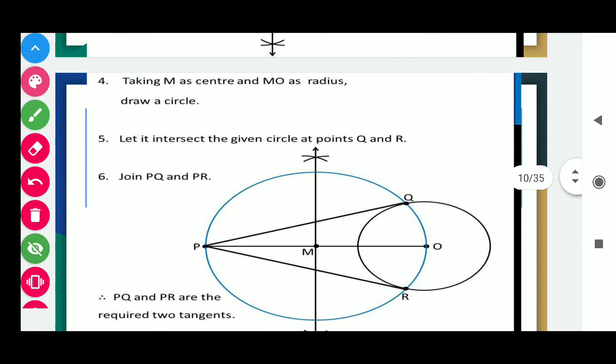Taking M as center and MO as radius, draw a circle. Take M as center and take this MO as the radius. MO is equal to MP because M is the midpoint of OP. So MO equals MP. Now taking M as the center, draw a circle. And this circle must pass through the point O as well as P.